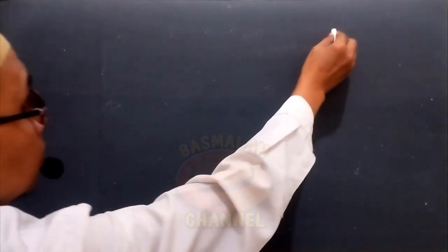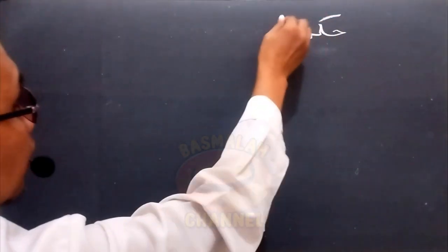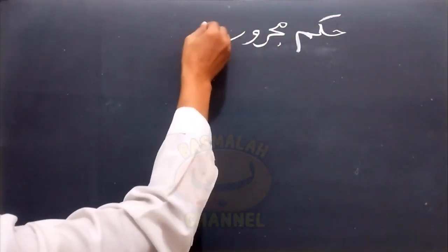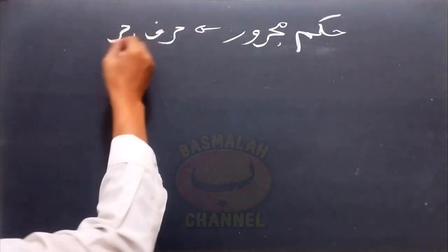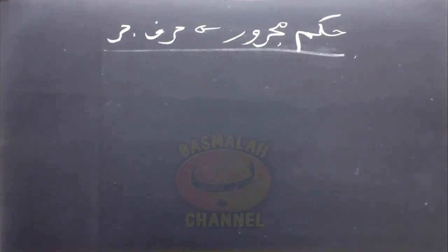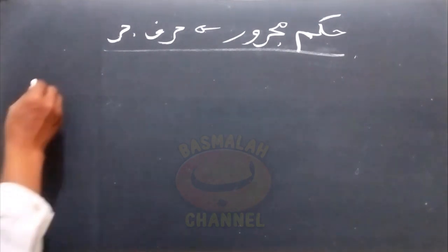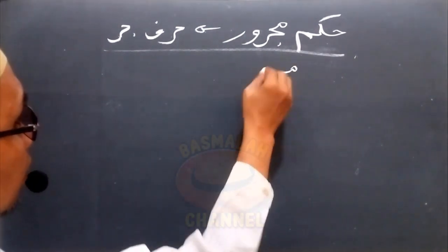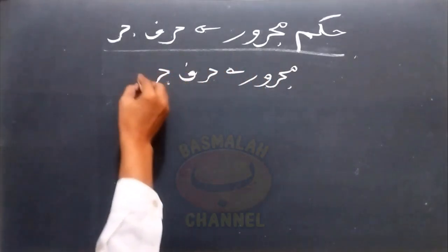Bismillahirrahmanirrahim. Pembahasan kita kali ini adalah tentang Hukum Dari Majrur Huruf Jer. Secara lafat, isim Majrur itu hukumnya pasti Jer. Lalu bagaimana secara mahal? Di sini terdapat beberapa hukum dari isim Majrur karena dimasukin oleh huruf Jer, baik huruf Jer asli, huruf Jer tambahan (za'id), maupun huruf Jer shabih za'id. Kita mulai dengan yang pertama, yaitu hukum Majrur dengan huruf Jer asli.